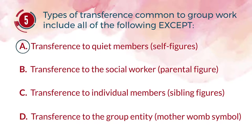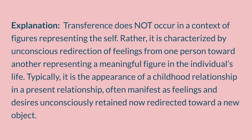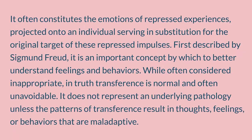The answer is A. Transference to quiet members, self-figures. Explanation: Transference does not occur in a context of figures representing the self. Rather, it is characterized by unconscious redirection of feelings from one person toward another, representing a meaningful figure in the individual's life. Typically it is the appearance of a childhood relationship in a present relationship, often manifest as feelings and desires unconsciously retained and now redirected toward a new object. It often constitutes the emotions of repressed experiences projected onto an individual serving in substitution for the original target of these repressed impulses.